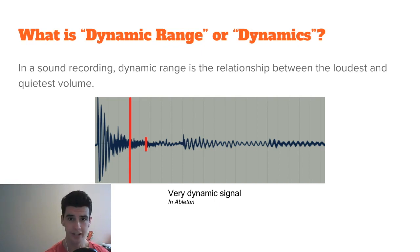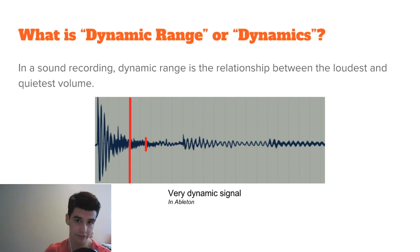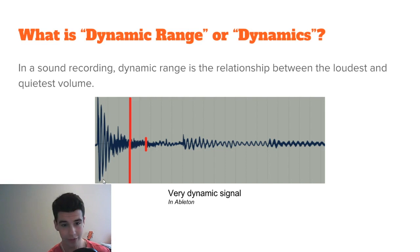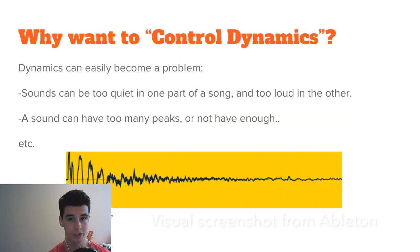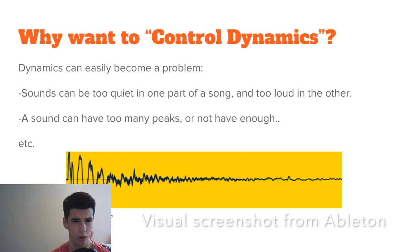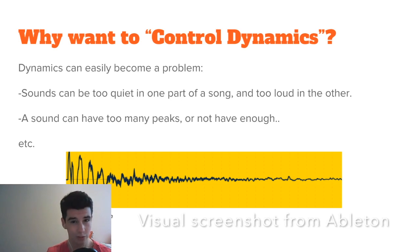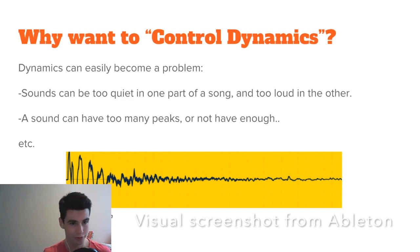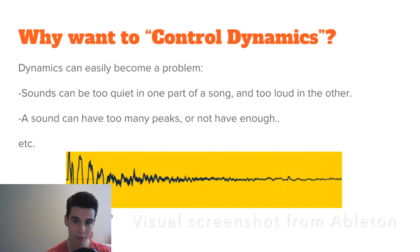In a sound recording, dynamic range is the relationship between the loudest and the quietest volume. As you can see here, this is a very dynamic signal because this is the loudest peak and this is the quietest, so it's actually quite a big difference. Why would you want to control dynamics? Well, dynamics can easily become a problem. Sounds can be too quiet in one part of the song and too loud in another, and a sound can have too many peaks or not enough.